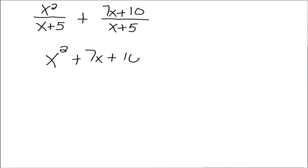So our first example is x squared over x plus 5 plus 7x plus 10 over x plus 5. So just like we did way back when adding fractions, when the denominators are the same, we can keep the denominator and add up the numerators. So we have x squared plus 7x plus 10 all over the one denominator of x plus 5.